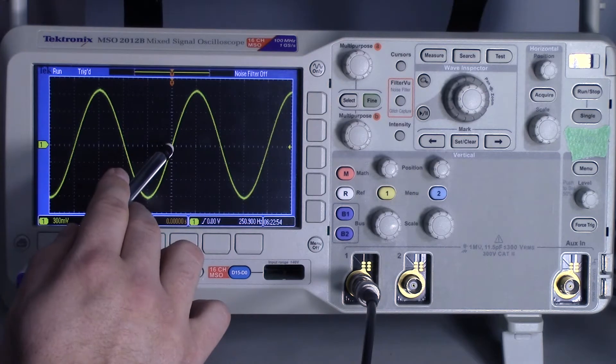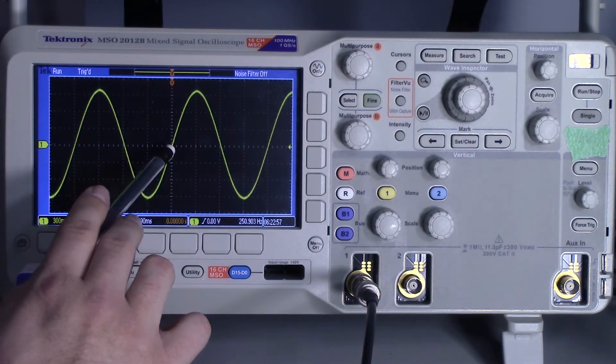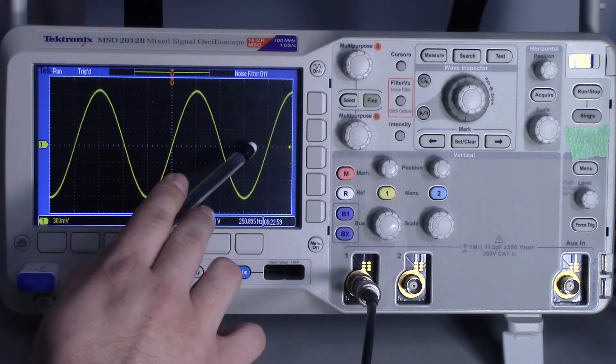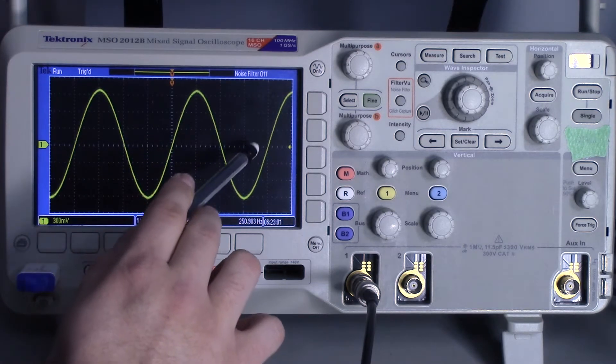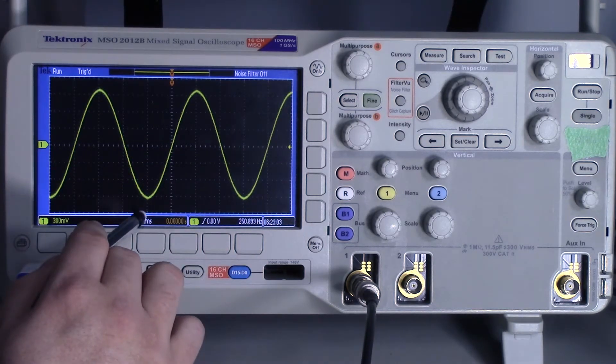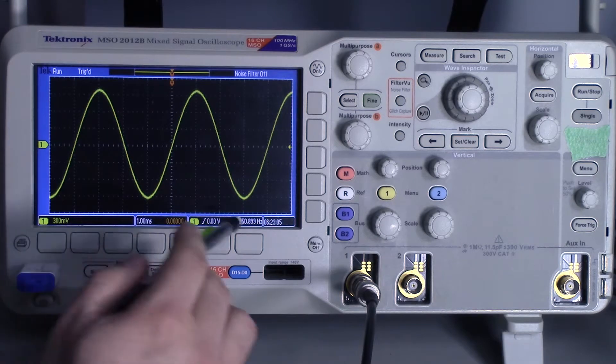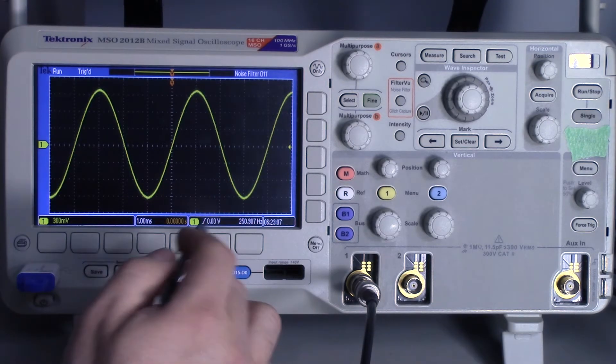So we have our trigger level set at zero volts, and we can count one, two, three, four. So this is one full period of the sine wave. So that means four milliseconds per period, which means 250 hertz.